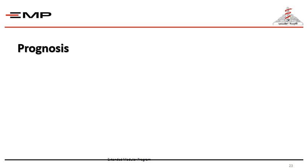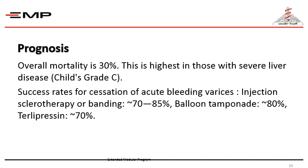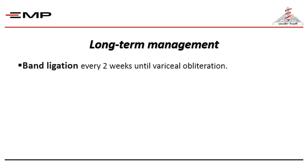Regarding prognosis, high-risk factors include age above 60 years, shock, other chronic diseases such as cardiac, respiratory, or renal diseases, the bleeding diagnosis, and the conscious level. The overall mortality is 30%, and this is highest in those with severe liver disease — Child's grade C. Success rates for cessation of acute bleeding varices by injection sclerotherapy or banding reach 70–85%, balloon tamponade reaches 80%, and terlipressin approximately 70%.